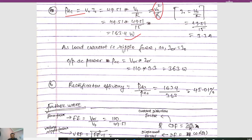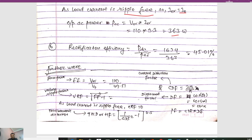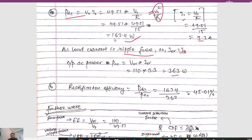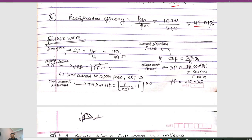Since the load current is ripple-free, I_or = I_note = V0/R = 49.51/15 = 3.3 A. The output AC power PS = VOR × I_or = 110 × 3.3 = 363 W. The rectification efficiency = PDC/PS = 163.4/363 = 45.01%.